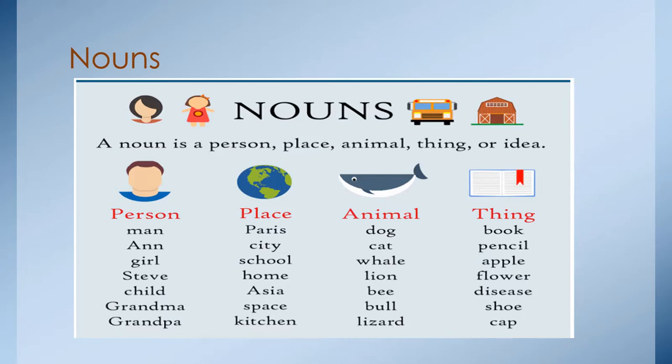Animal, if we are talking about animals, I have some examples right here like dog, cat, whale, lion, bee, bull, lizard. Or thing, anything that you know or you can think. So like book, pencil, apple, flower, etc.